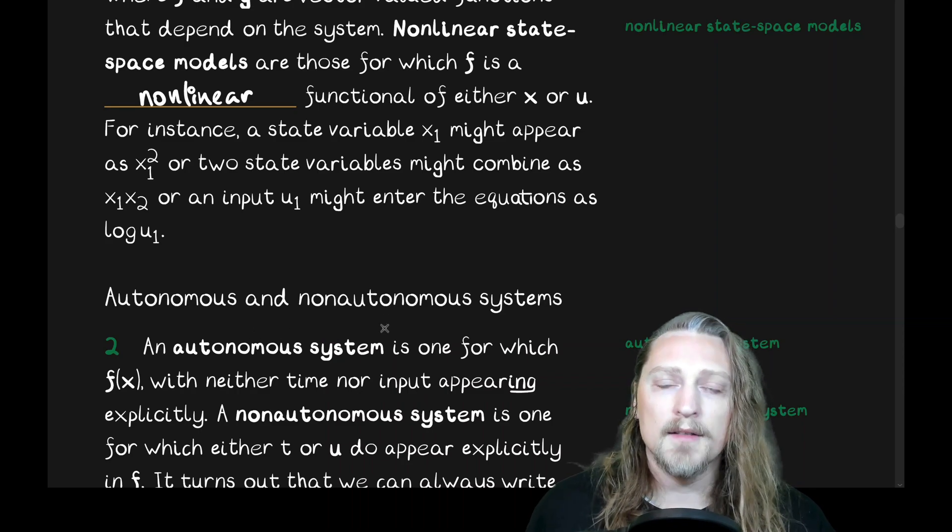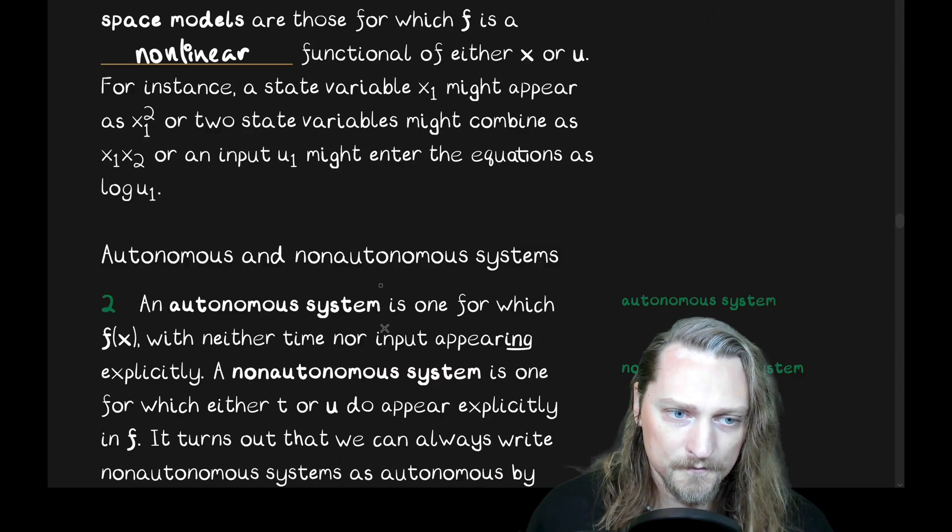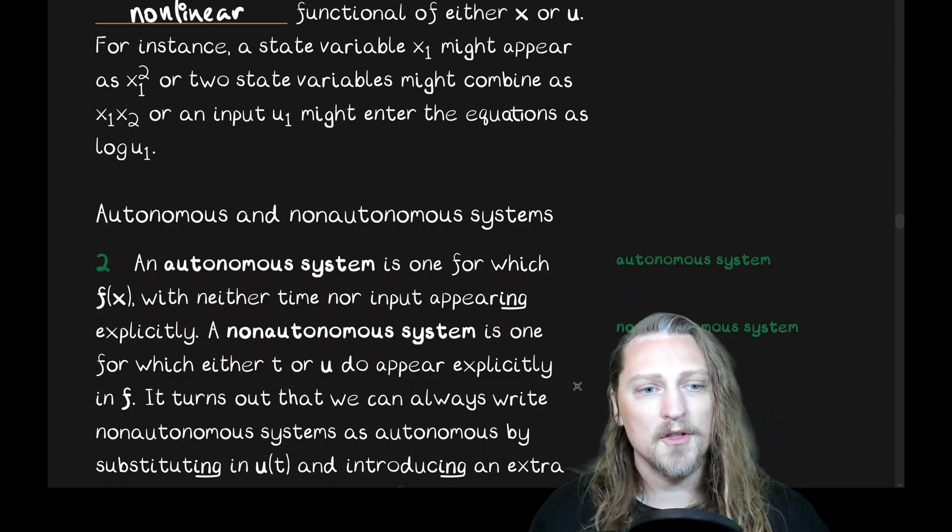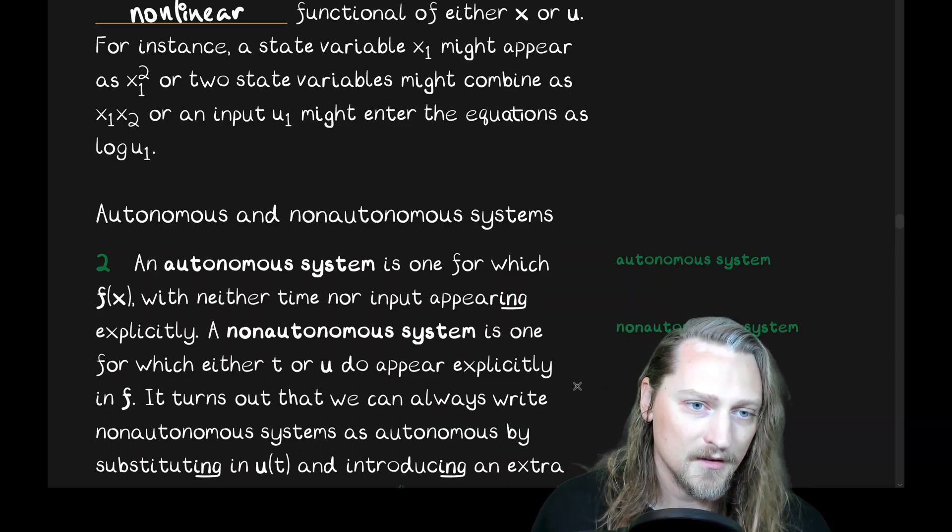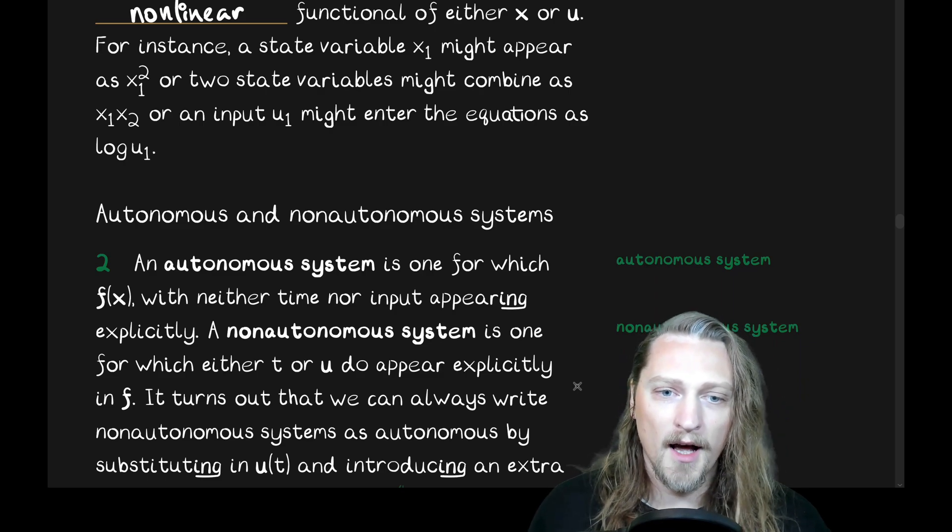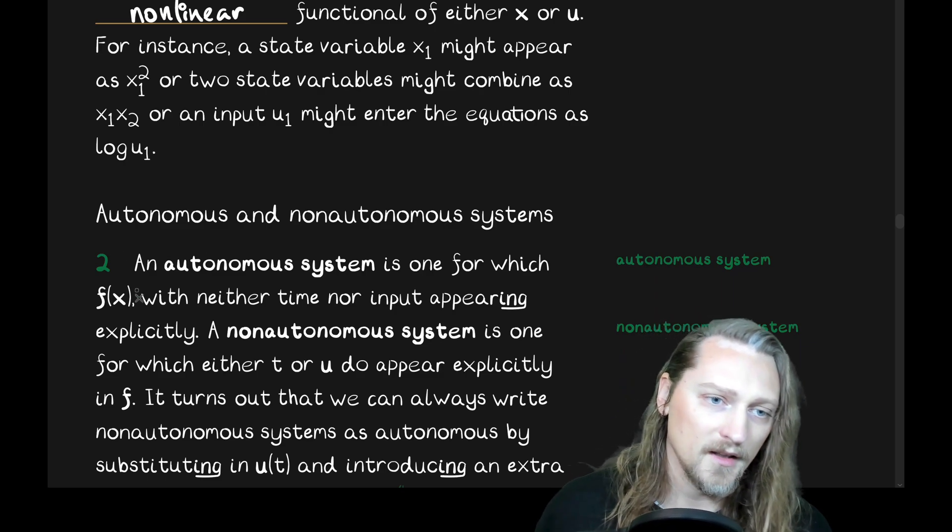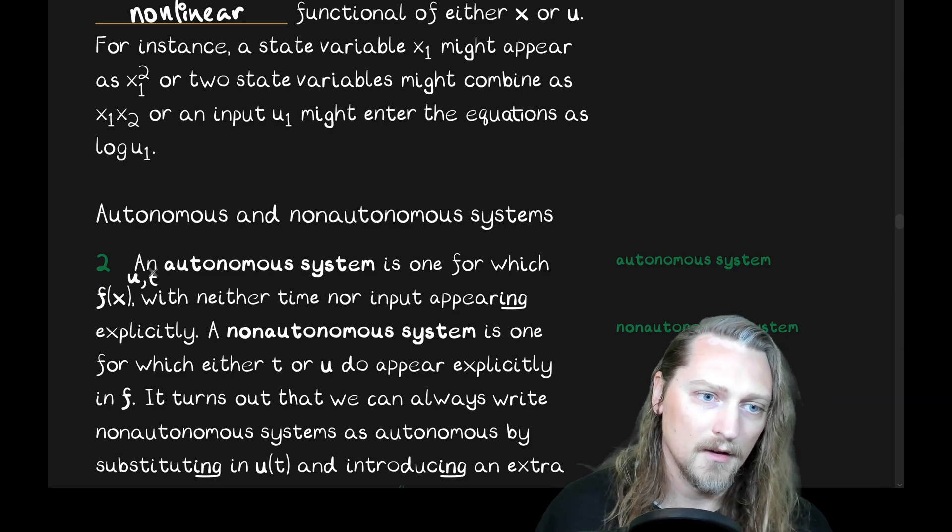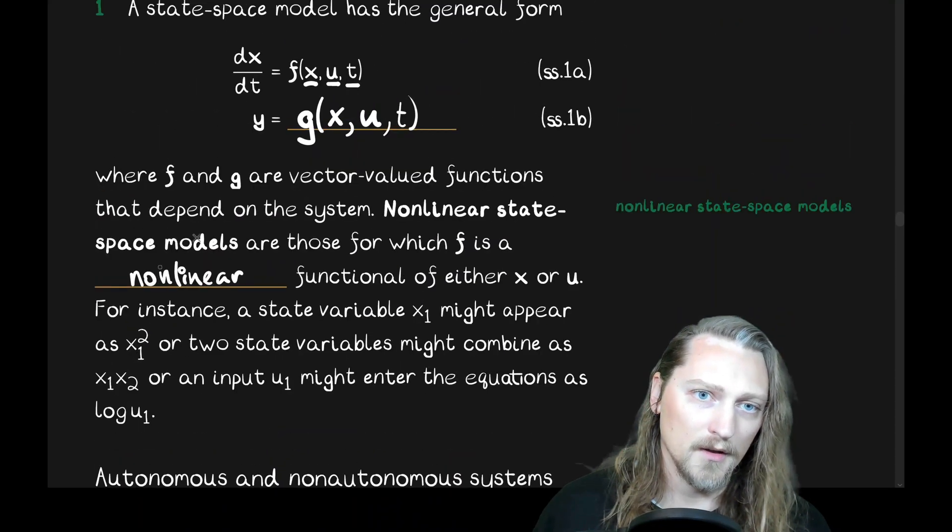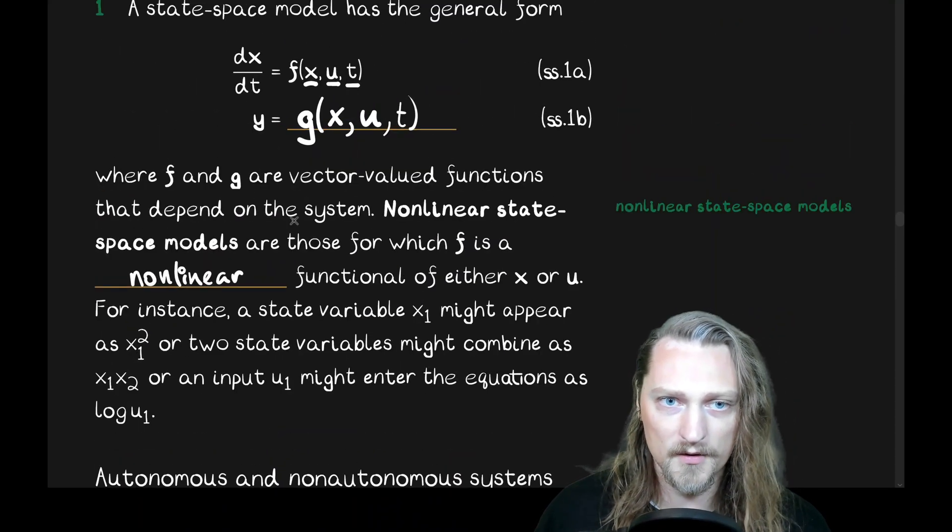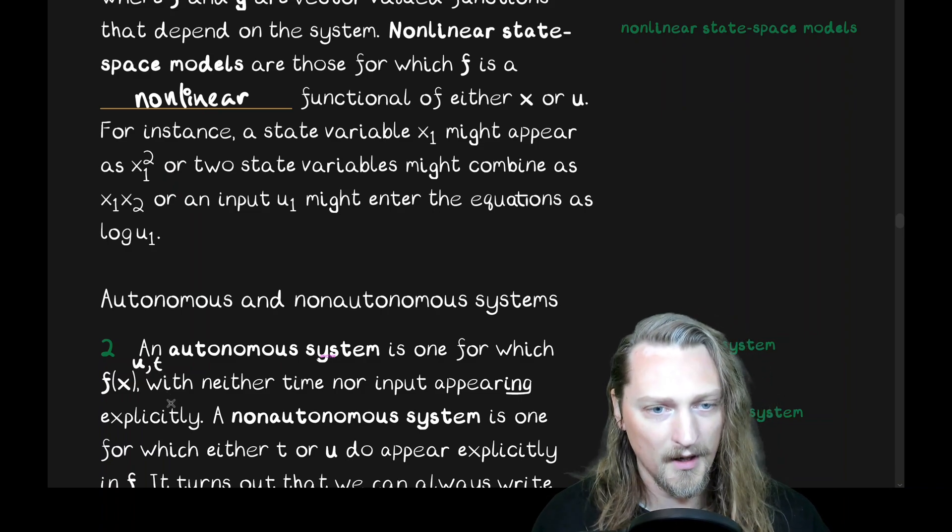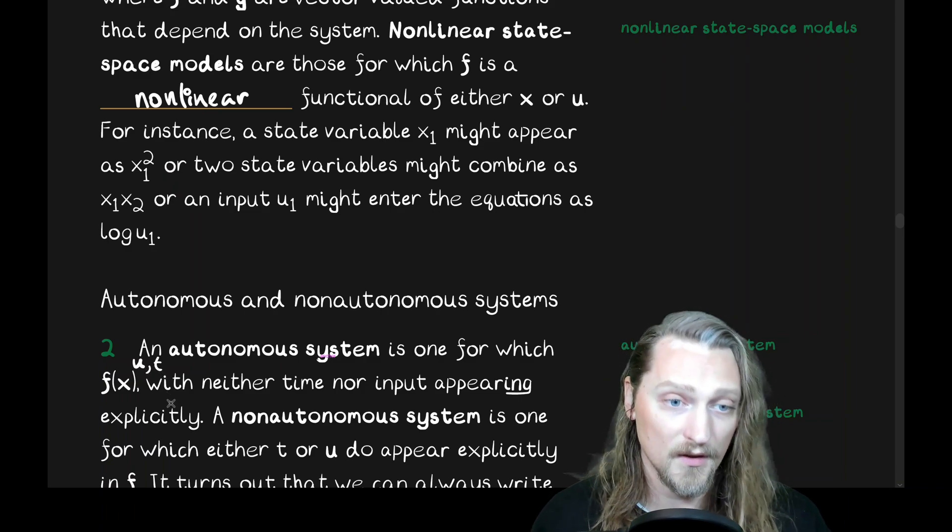Autonomous and non-autonomous systems. An autonomous system is one for which f is a function of x with neither time nor input appearing explicitly. Notice we don't have u in here and we don't have time, which we did have up here when we looked at the general form. So, when time and the input don't appear explicitly, we have what's called an autonomous system.